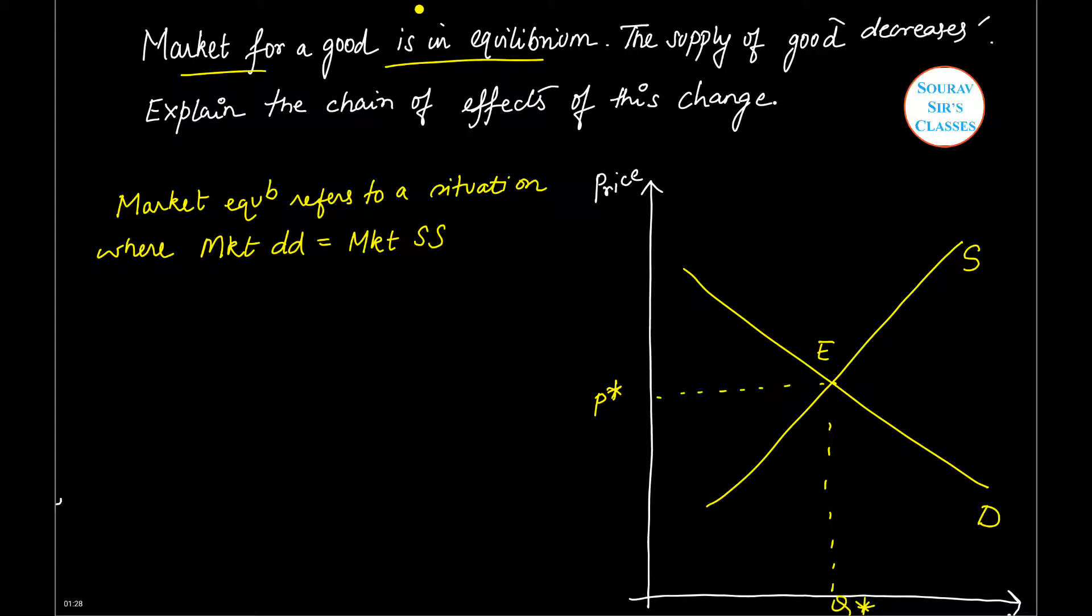Now next, the supply of the good decreases. So there is a decrease in supply, keeping demand unchanged.